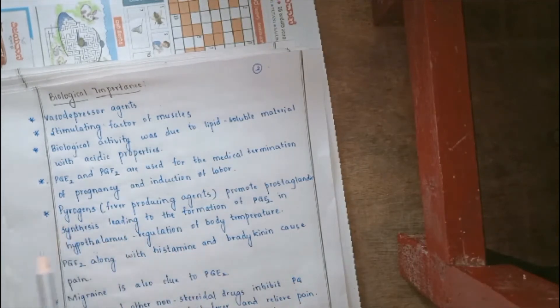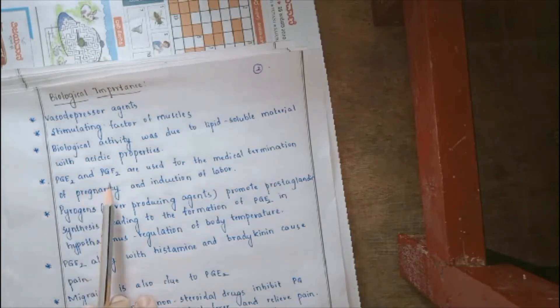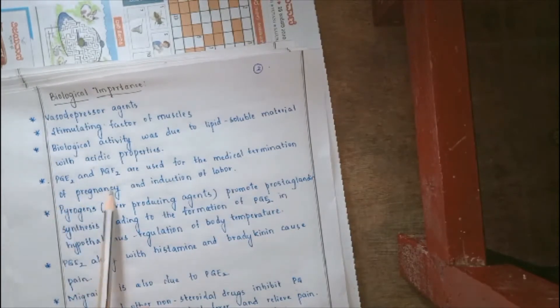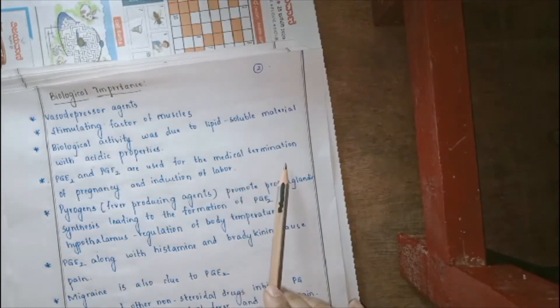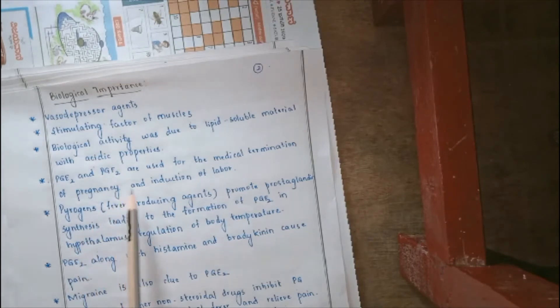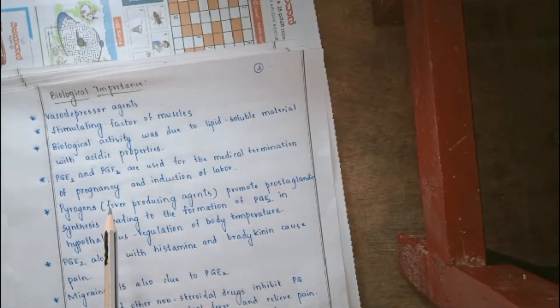So, when we look at the importance or the biological importance, we can see that there are two major systems that is PGE2 and PGF2. These two are said to be helpful in the medical termination of pregnancy. That means, we call it as an abortion. That means, unwanted pregnancies could actually be terminated by PGE2 and PGF2 prostaglandins.